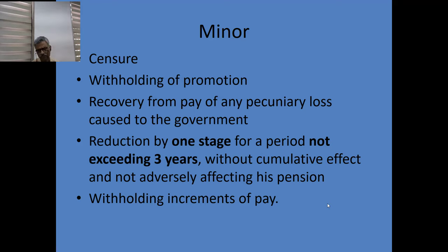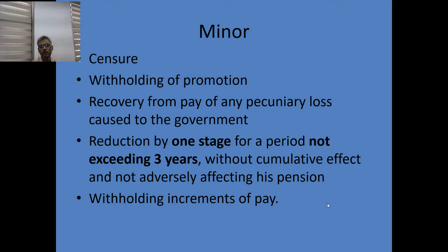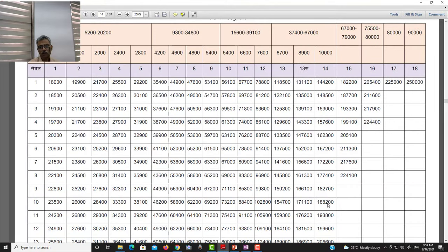Coming to the fourth penalty — reduction by one stage — once this penalty order is issued, the department will also have to issue a separate pay fixation order showing where the government servant's pay will be reduced. Both the fourth and fifth penalties require the department to issue a separate order fixing the pay of the government servant during the period of penalty.